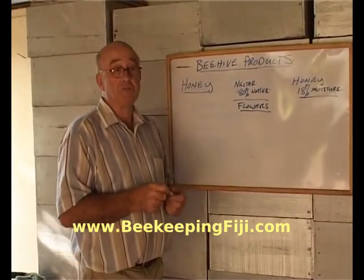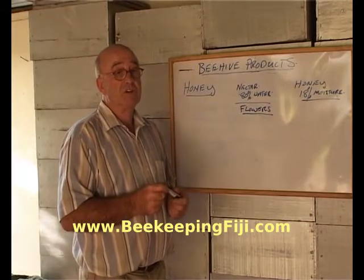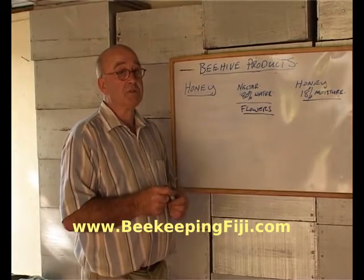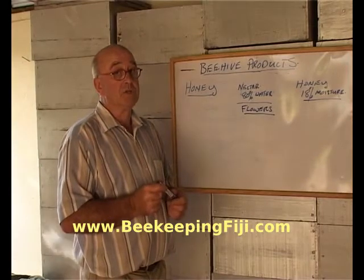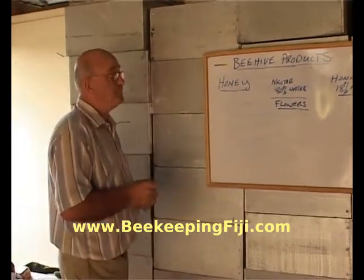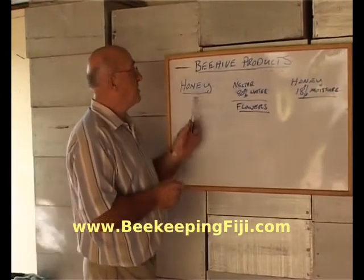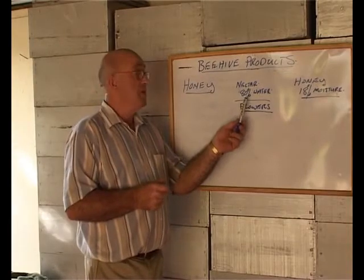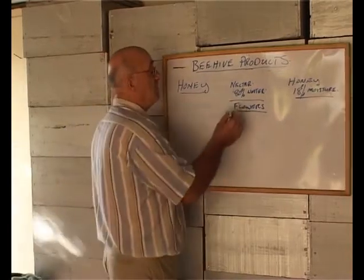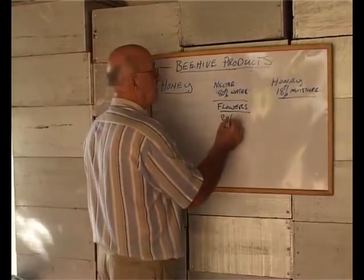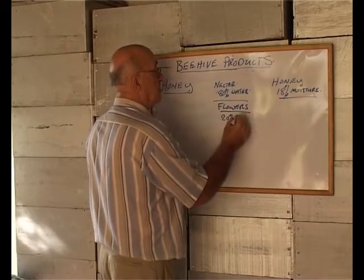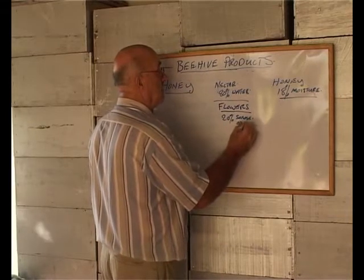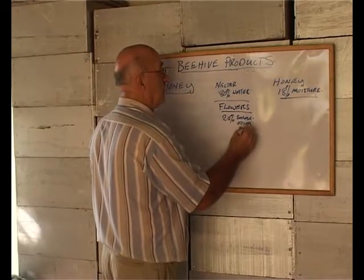Not all flowers produce nectar, but some do. The nectar is there as an attractant to the bees, to encourage the bees to come to the flowers, which in the process causes pollination. The bees gather the nectar from the flower, and the nectar is 80% water — the balance being 20% sucrose and other minor proteins.